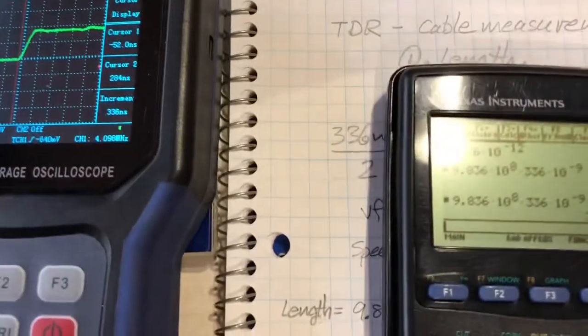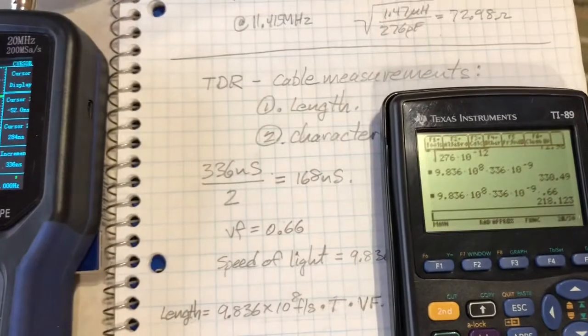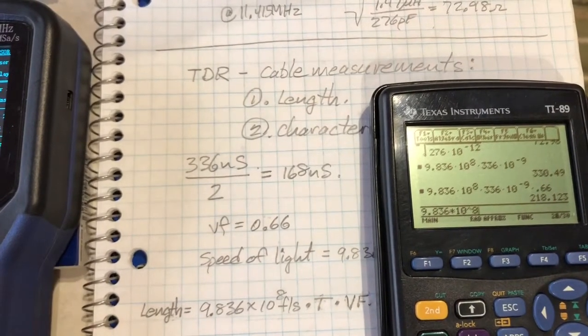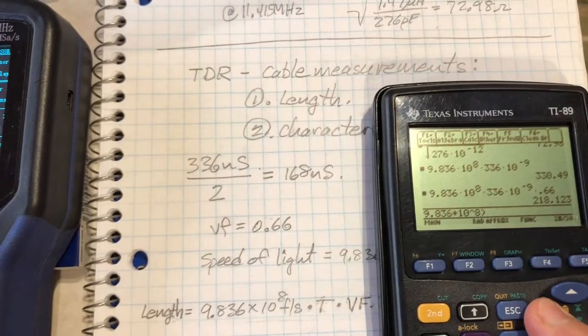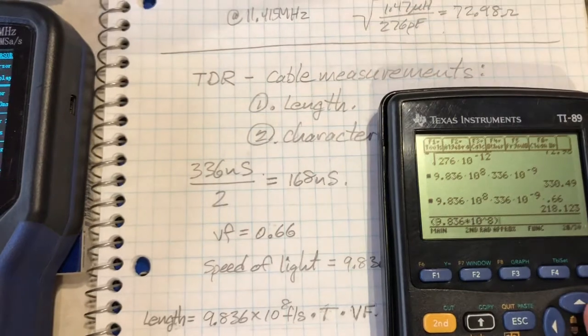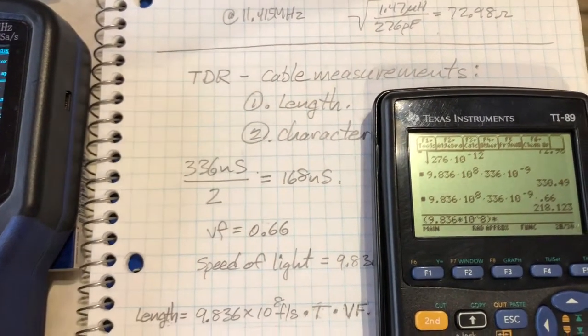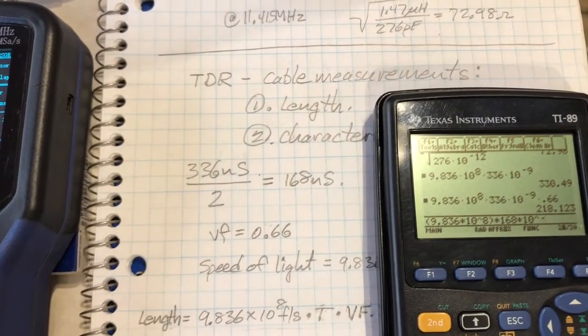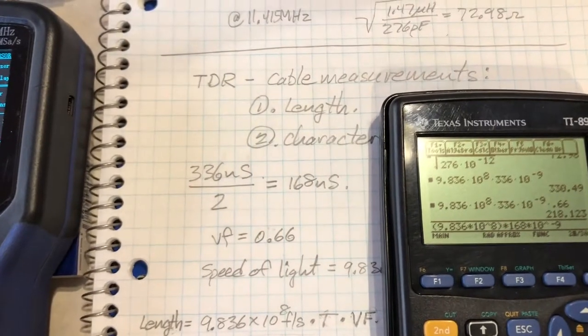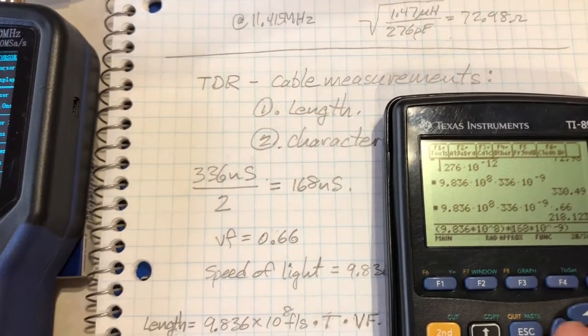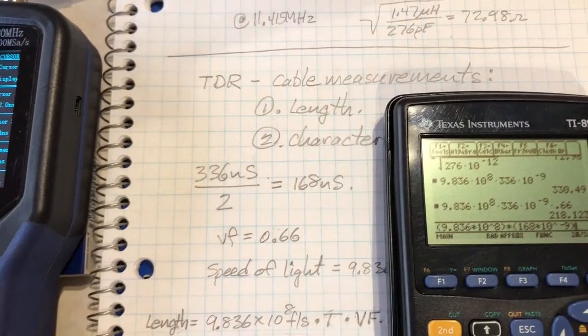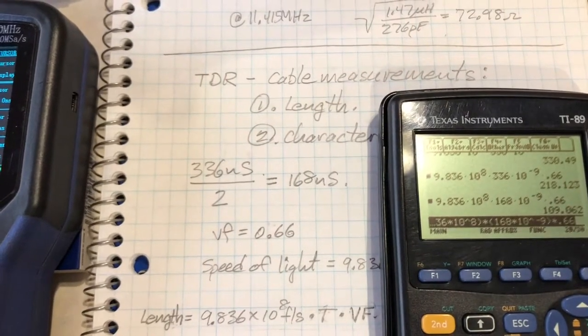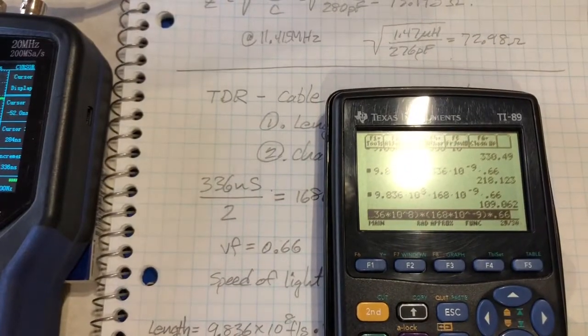Let's plug those numbers into the calculator. We've got 9.836 times 10 to the eighth, and we're going to put brackets around that to isolate it. Now we're going to add the time which we calculated was 168 nanoseconds, so that would be times 10 to the negative 9. We're going to put those in brackets as well. Now we're going to multiply by the velocity factor of 0.66, and when we do that we come up with a cable length of 109 feet.